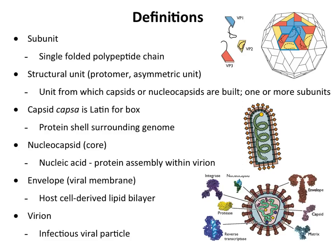A structural unit is the unit from which capsids or nucleocapsids are built. When these three subunits — the blue, yellow, and red — come together, they form a structural unit made up of one of each. A capsid — this is the virus particle, that's poliovirus here — is the protein shell surrounding the genome. The nucleocapsid is the nucleic acid-protein assembly within the virion.